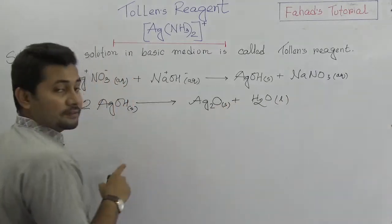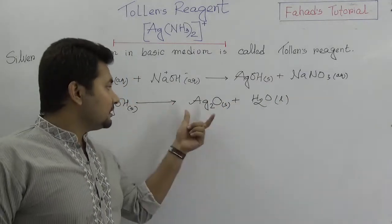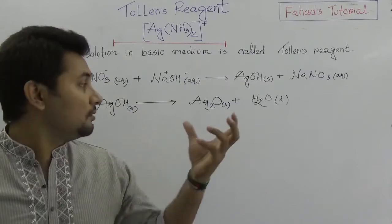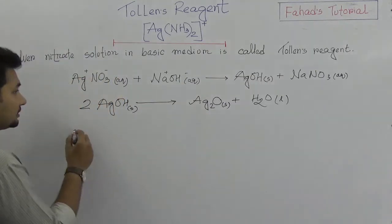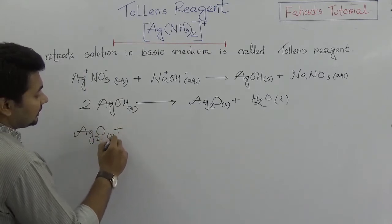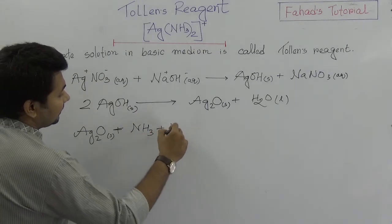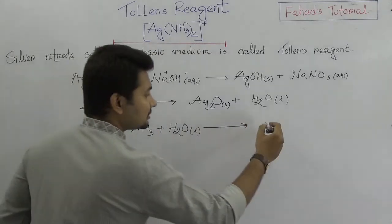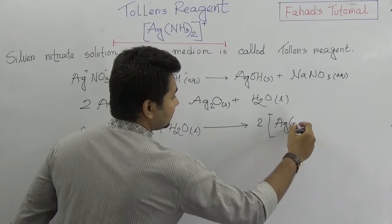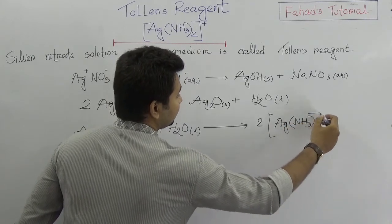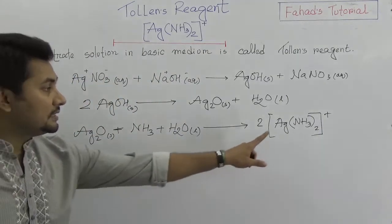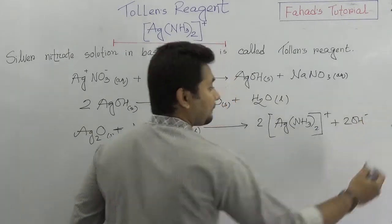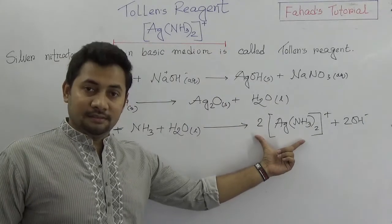Then, in this silver oxide, when ammonia solution is added by drops, all the precipitate will dissolve. The silver oxide reacts with ammonia and water to produce the diamine silver ion — that is, di meaning two, so diamine silver ion — along with two hydroxide ions. That is the Tollens' reagent, because it contains silver ions.